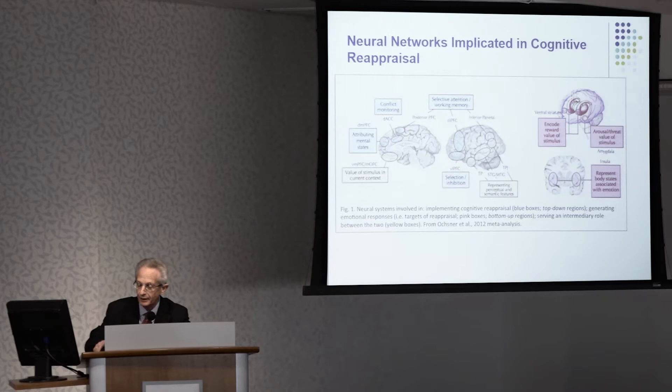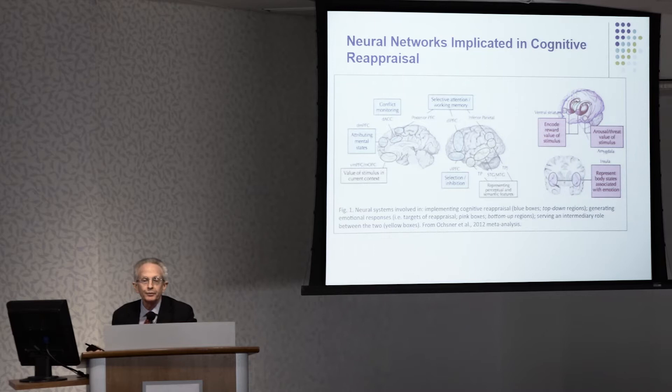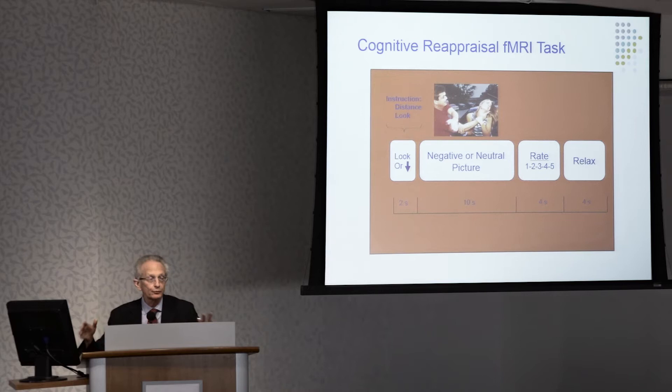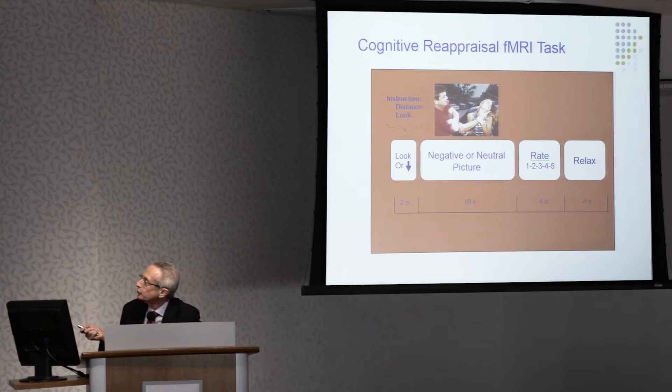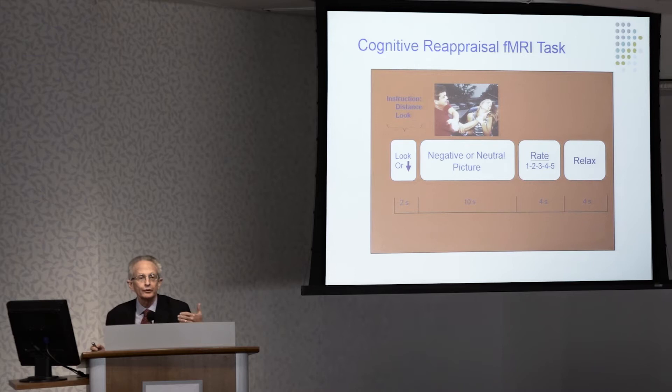The first study we did was to see what's going on in borderline patients when they try to use reappraisal by distancing. This is the task we used in the scanner: we would have subjects come in and show them emotionally salient pictures from the affective IAPS picture series — either negative pictures or neutral pictures. When looking at negative pictures, we asked them for half to use reappraisal by distancing, and for the other half to just let themselves feel whatever feelings came, so we could see the difference in brain activity between looking and distancing.